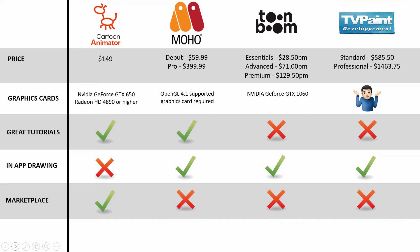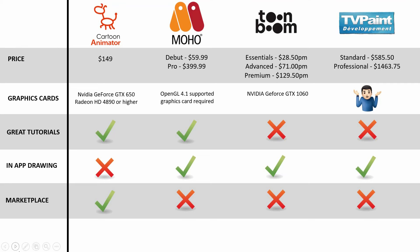With Moho, I remember they previously had a marketplace where you could purchase characters, including some politicians and royals, but I couldn't find a marketplace on their current website, so I'm not sure if that option still exists. Toon Boom and TV Paint also do not have a marketplace.